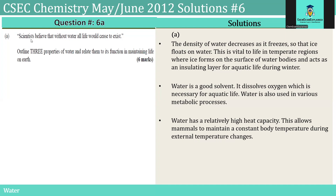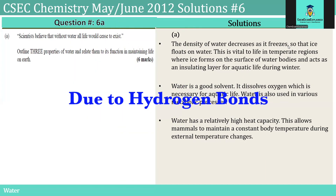6A. Scientists believe that without water, our life would cease to exist. Outline three properties of water and relate them to its function in maintaining life on Earth. In answering the question, we will start with the density of water. The density of water decreases as it freezes so that ice floats on water. This is vital to life in temperate regions where ice forms on the surface of water bodies and acts as an insulating layer for aquatic life during winter.